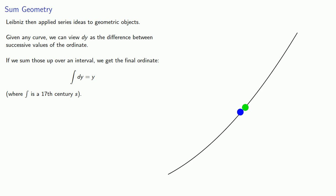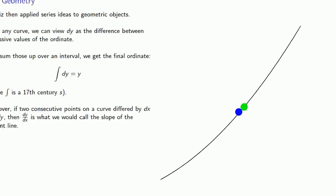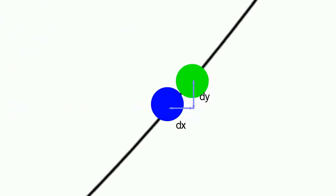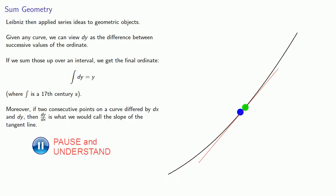Moreover, if two consecutive points on a curve, whatever that means, differed by dx and dy, then the ratio dy over dx is what we would now call the slope of the tangent line. And at this point, things should all start to look very familiar to those who've taken calculus.